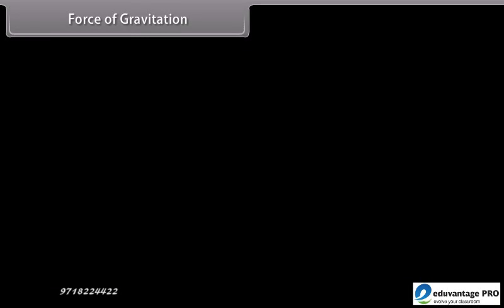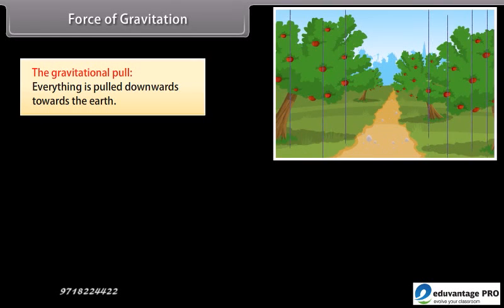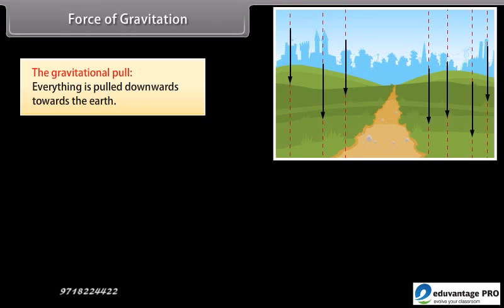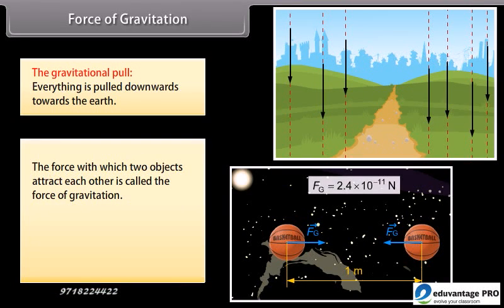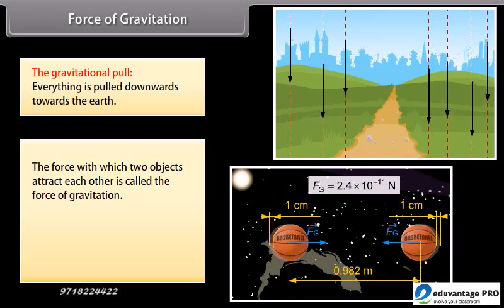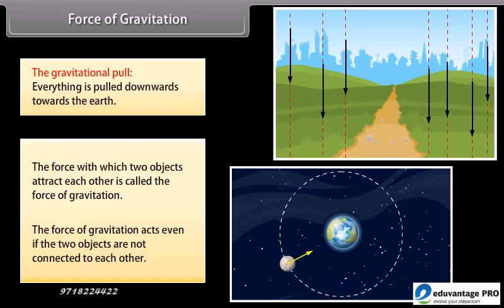Force of Gravitation: Everything is pulled downwards towards the earth. The force with which two objects attract each other is called the force of gravitation. The force of gravitation acts even if the two objects are not connected to each other.